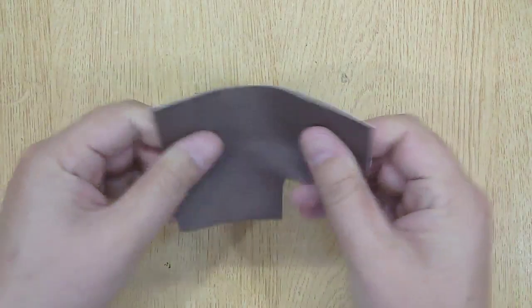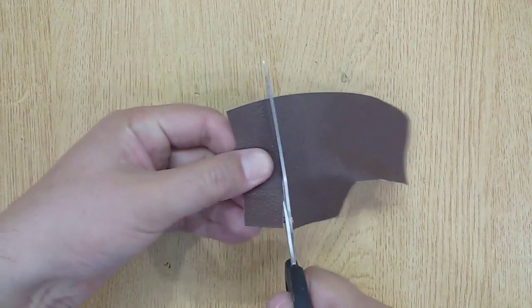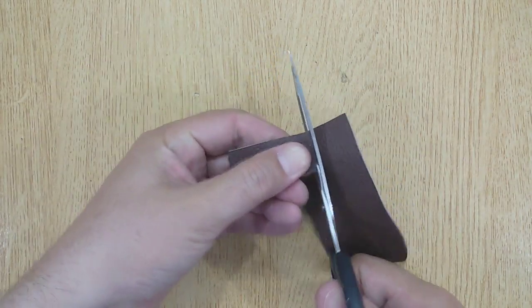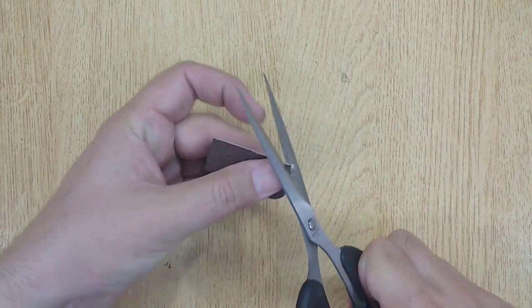To make this slingshot, the first thing you will need is a piece of leather. Cut it into a rectangular shape to make a pouch. Make the corners round.